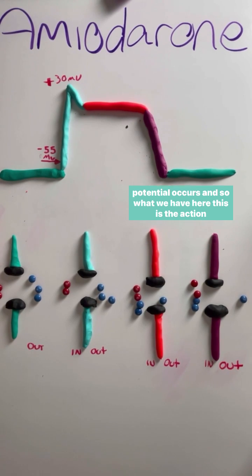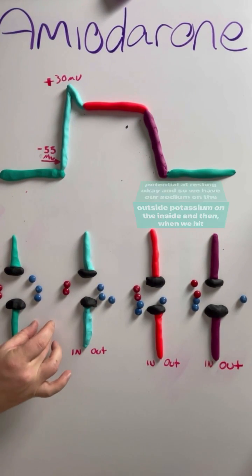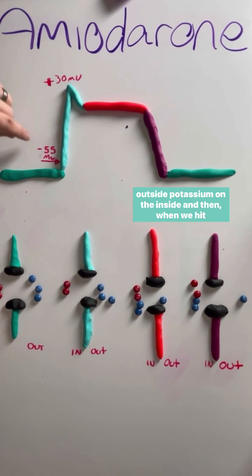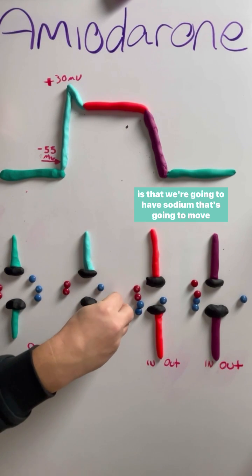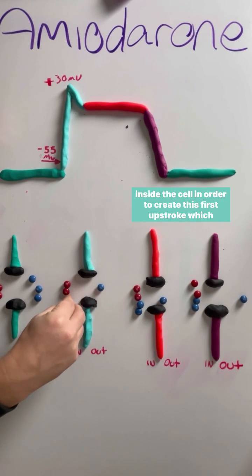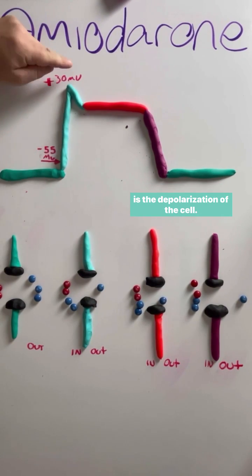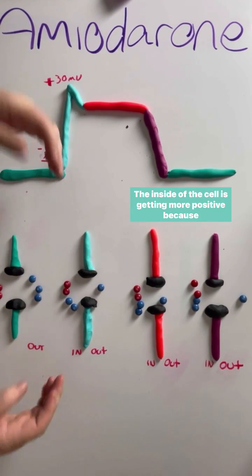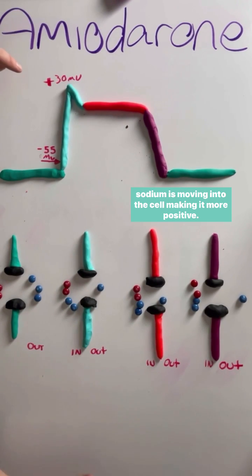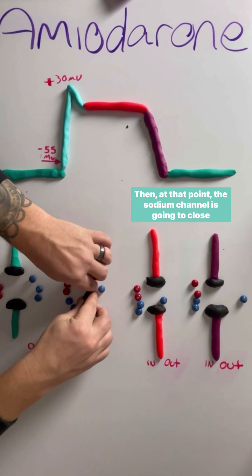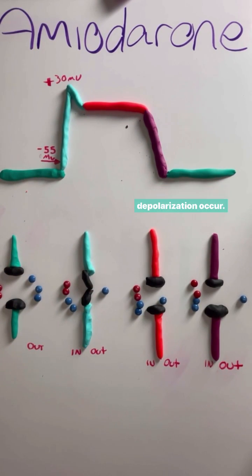So what we have here is the action potential at resting. We have our sodium on the outside, potassium on the inside. And then when we hit action potential, this first upstroke here — sodium is going to move inside the cell in order to create this first upstroke, which is the depolarization of the cell. The inside of the cell is getting more positive because sodium is moving into the cell. Then the sodium channel is going to close after that depolarization occurs.